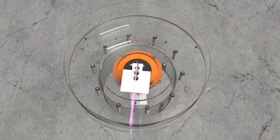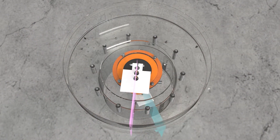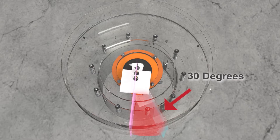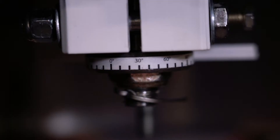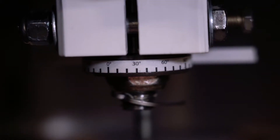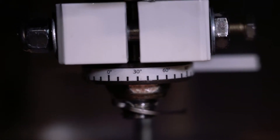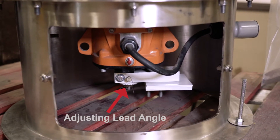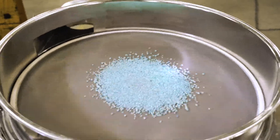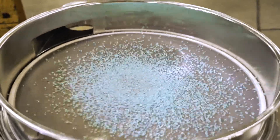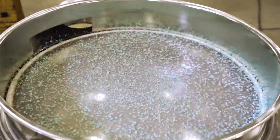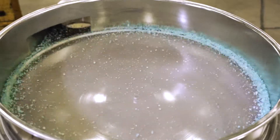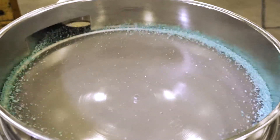Your lead angle is the angle between your top weight and your bottom weight. The standard lead angle is 30 degrees. The lead angle is important because it controls the speed that the product in the separator moves outward. The larger your lead angle is, the faster it will move outward.